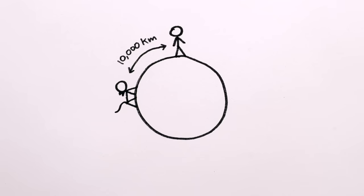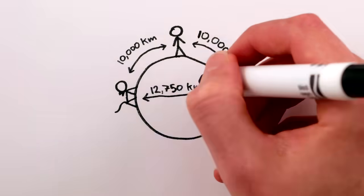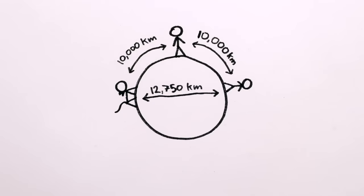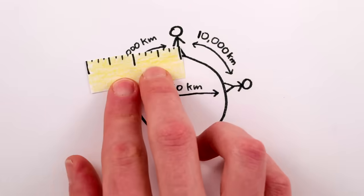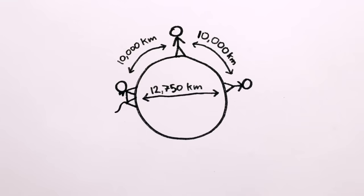If I walk 10,000 kilometers away from my cat, and you continue on walking 10,000 kilometers more, you're not 20,000 kilometers away from my cat, you're just 12,750 kilometers away. In fact, the farthest on earth you can get from anything on earth is 12,750 kilometers.